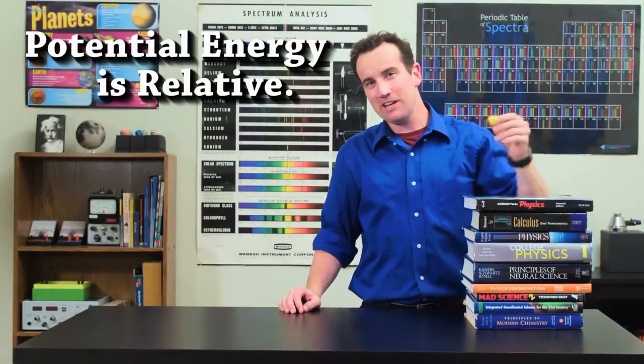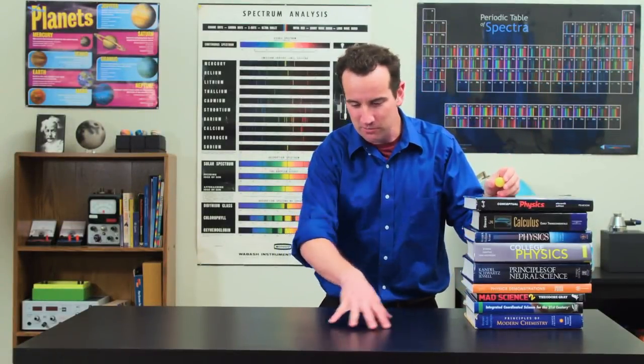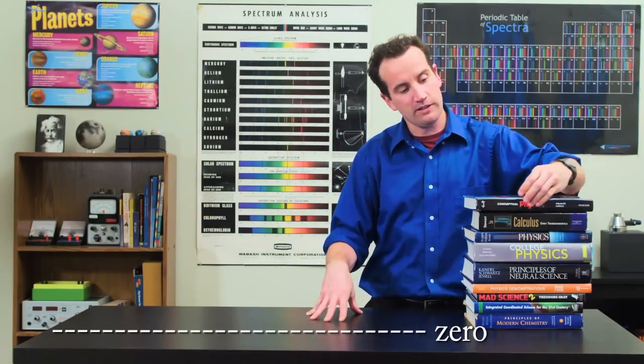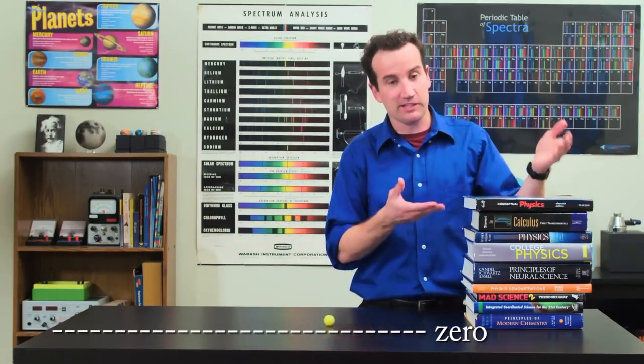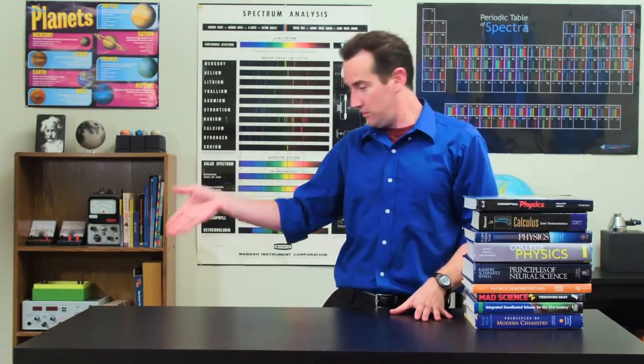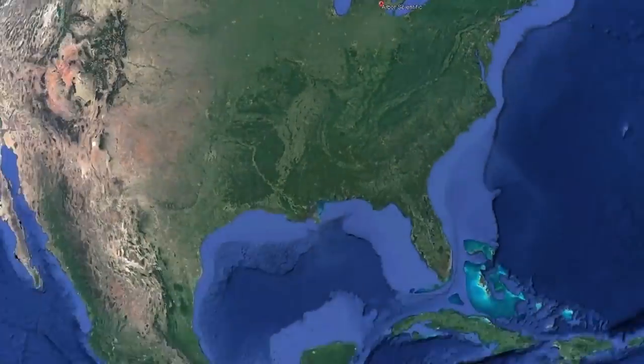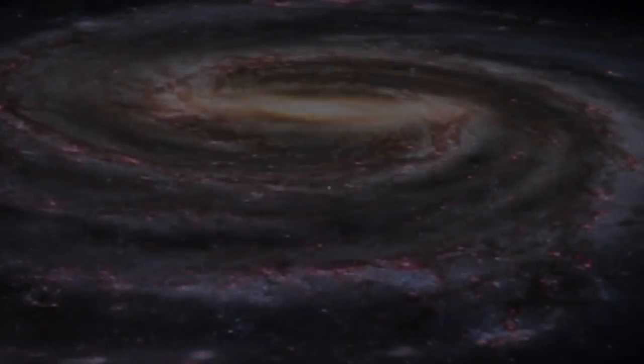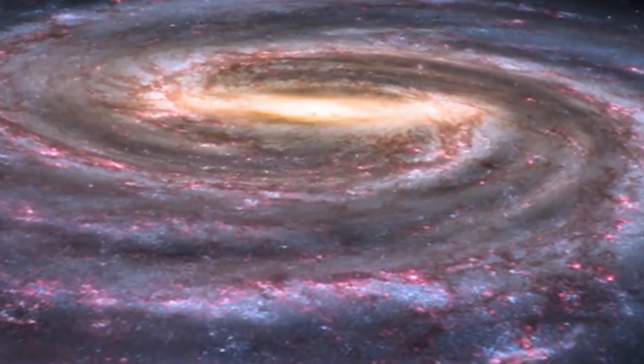Most people understand that potential energy is relative to some zero energy point. For example, this ball has the potential to roll off a stack of books to the table, but it could also fall off the table to the floor, and it could even fall down a well to the center of the Earth, and it even could fall to the center of the Milky Way Galaxy!